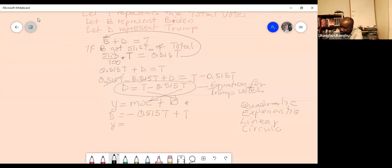So in that case, y is equivalent to d, and then m is equivalent to negative 0.515. And this T, it just happens that the value of T is equivalent to b, the lowercase b, not uppercase. So that's a linear equation. That's a linear equation.